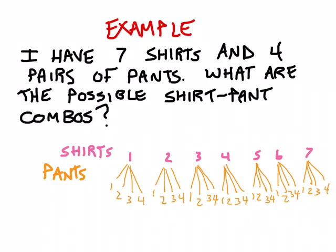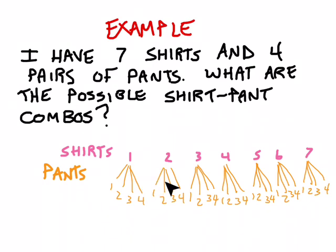Here's a finished and slightly cleaned-up version. Every branch of each tree represents a combination — shirt one can be combined with pants one, two, three, or four, representing four different possibilities; then four more on shirt two, four on shirt three, and so on. Again, we can see all 28 different possible combinations of shirts and pants.